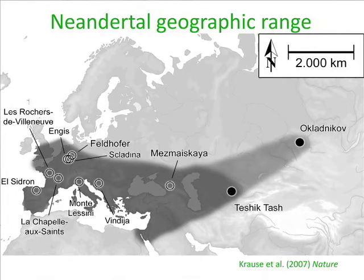Geographically, Neanderthals are known mostly from Europe. In this picture are sites where we have extracted DNA from fossil bones and shown by DNA sequence analysis that they're Neanderthals. A sample from Teshik-Tash was shown to be Neanderthal, so their range extended well into Asia — and it's a really big open question exactly how far east the Neanderthals went. Were they in China? That is an open question.